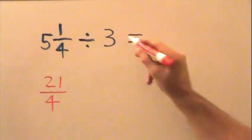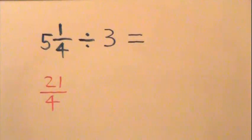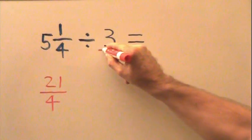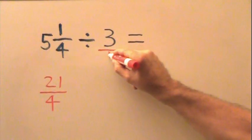Next, we notice that our whole number 3 needs to be put into fraction form. How do we do that? We put our fraction bar and a denominator of 1.